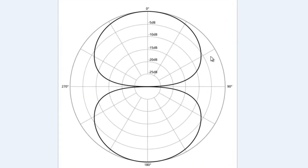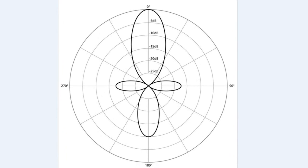Then there's figure-eight — the name is appropriate. It picks up in front and in back but doesn't pick up much to the sides. Then you have the shotgun pattern, which picks up slightly to the side and some to the back, but is typically a really tight pattern towards whatever you're pointing it at. This is why you'll see reporters and audio professionals using boom poles with a shotgun mic pointed over an actor, picking up a very specific area.